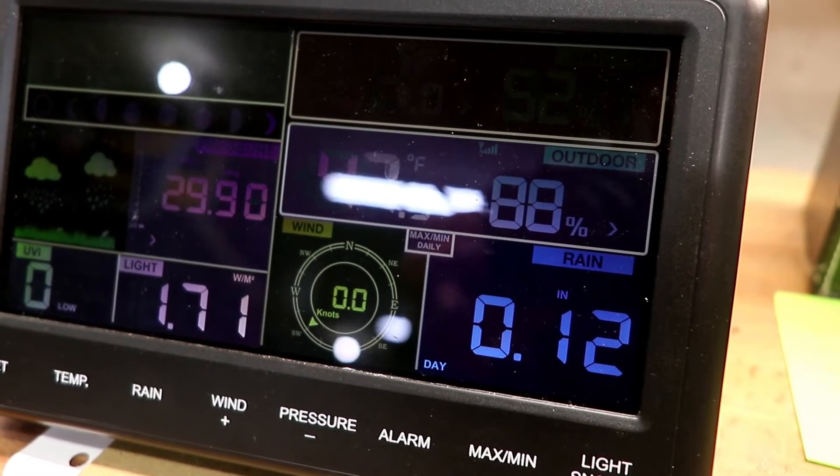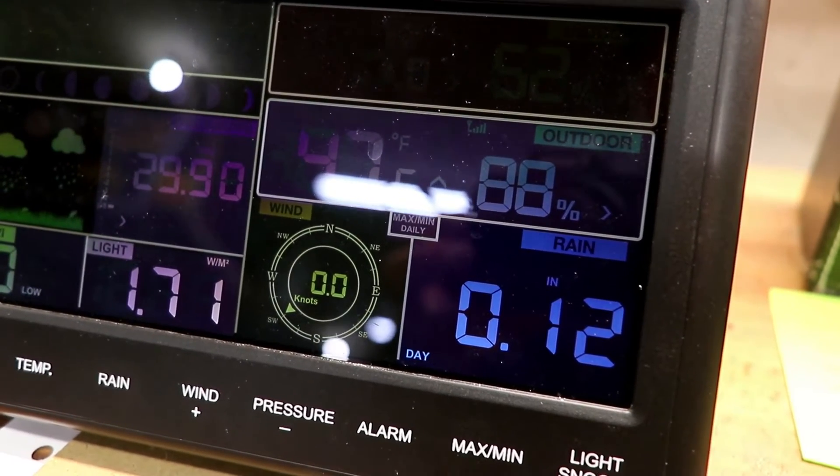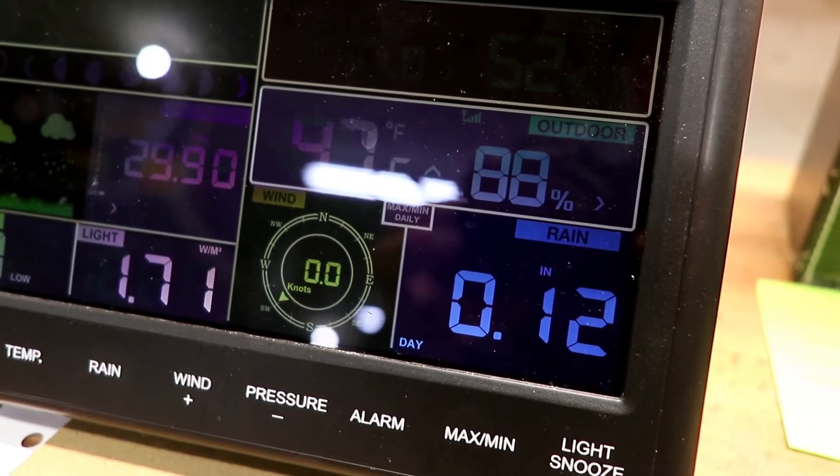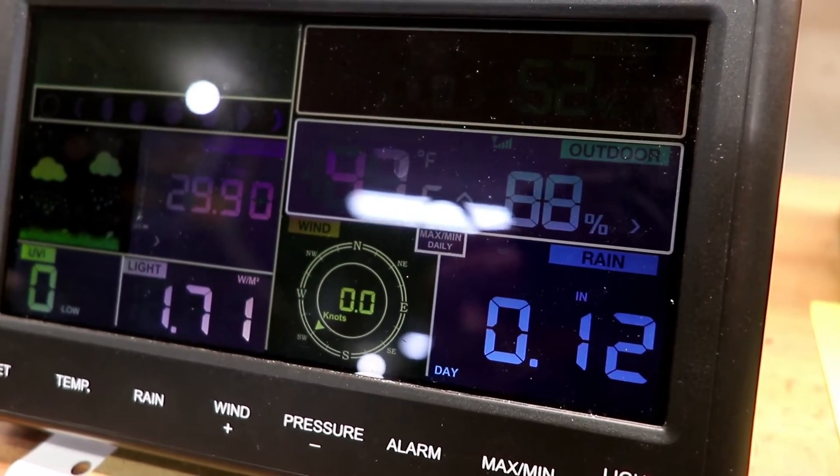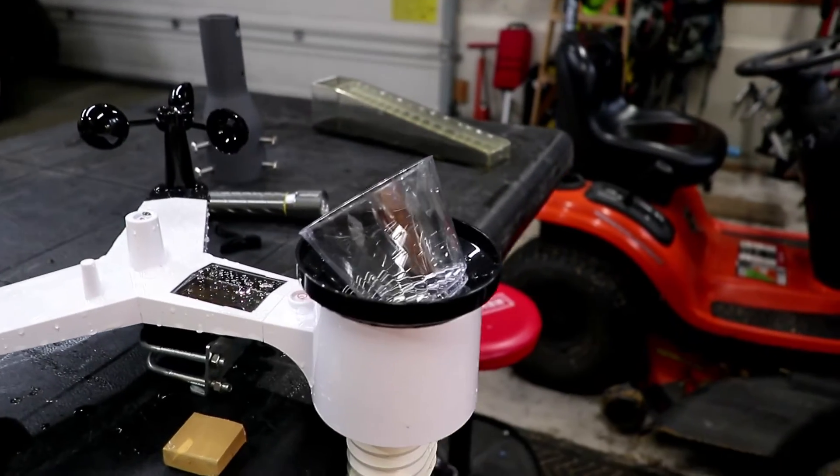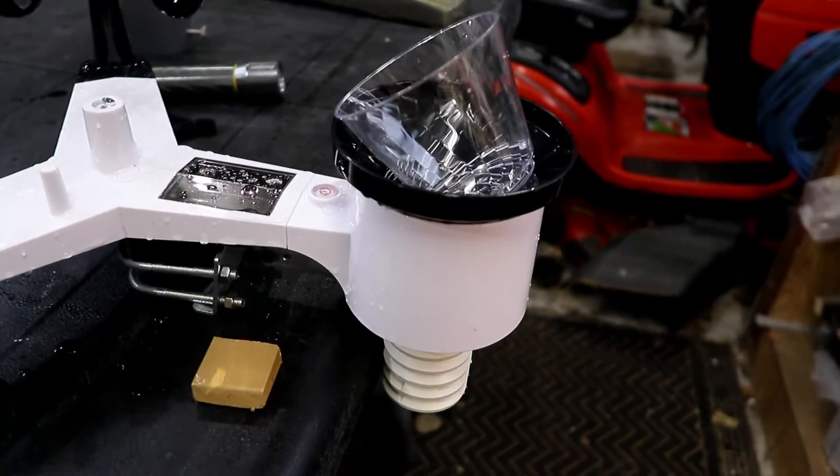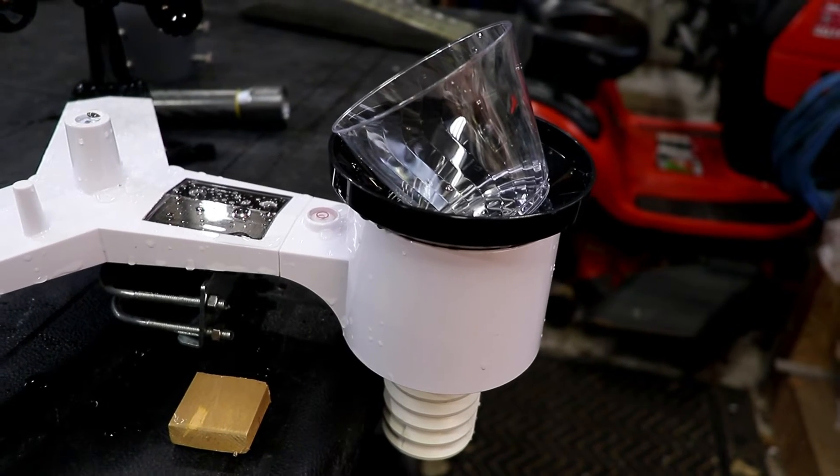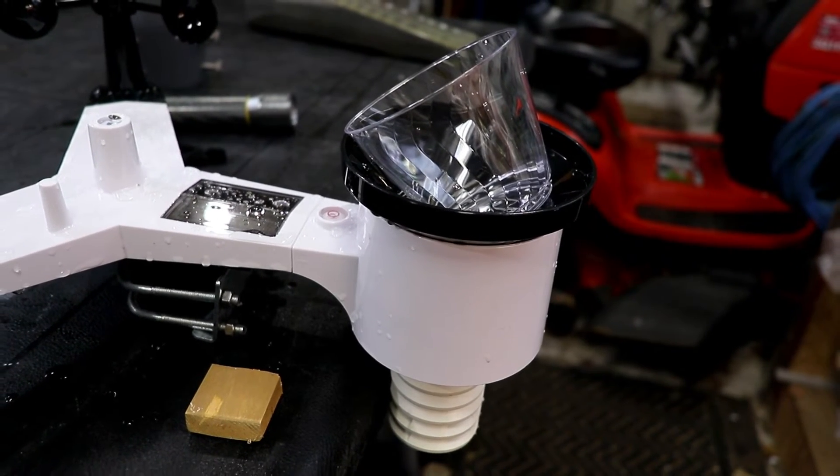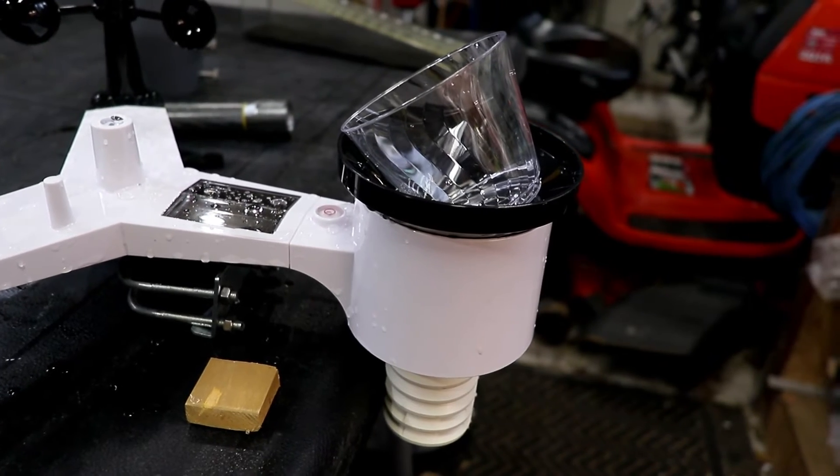Well, the cup is empty, our 3.87 cubic inches of water equivalent to 0.25 inches of rain for this catchment area. Let's go to the console and see how it turned out.